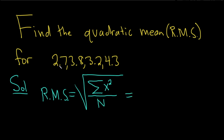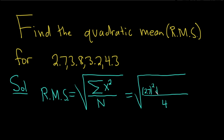So this is equal to — we have 1, 2, 3, 4 numbers, so our N is going to be 4, and that goes on the bottom. Now we have to square all of these numbers: 2.7 squared, plus 3.8 squared, plus 3.2 squared, plus 4.3 squared. So we take the square root of all of those numbers squared, divided by 4.